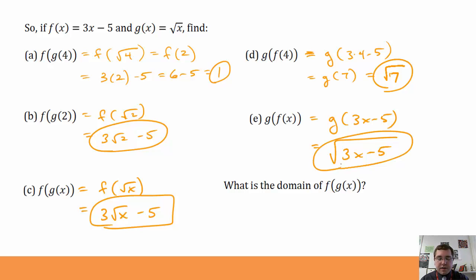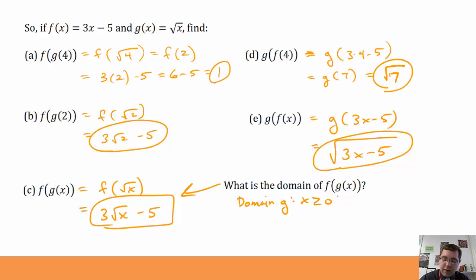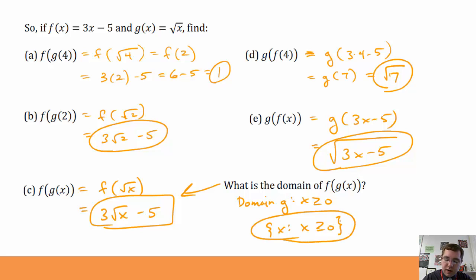Notice that f of g of x is not equal to g of f of x — composing in opposite directions does not always give us the same thing. What is the domain of f of g of x? I have to consider the domain of the original inside function. The domain of g requires x to be greater than or equal to 0, because I cannot have a negative number underneath the square root. There are no limits on the domain of f since it's linear, so the domain of f of g of x is also x greater than or equal to 0.